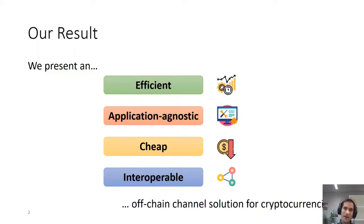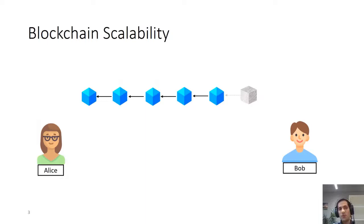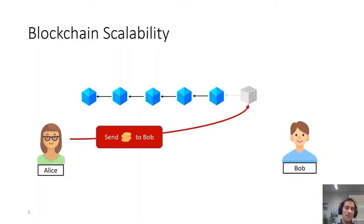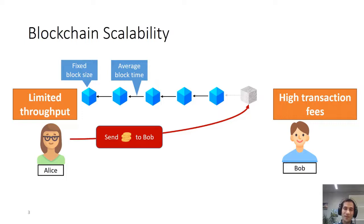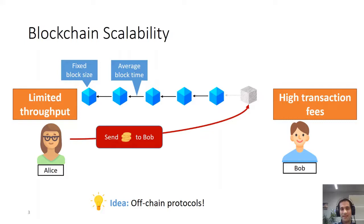Let's start with some background and motivation. Blockchains were introduced as an infrastructure to enable parties to make payments or run applications in a decentralized manner. However, the size of each block is fixed, and the average time during which a block is produced is also fixed. This results in blockchains having limited throughput and parties having to pay high transaction fees. Off-chain protocols were introduced as scalability solutions to overcome this problem.